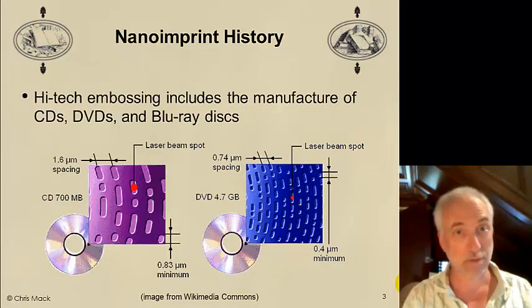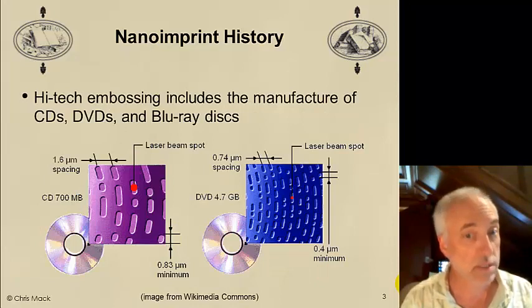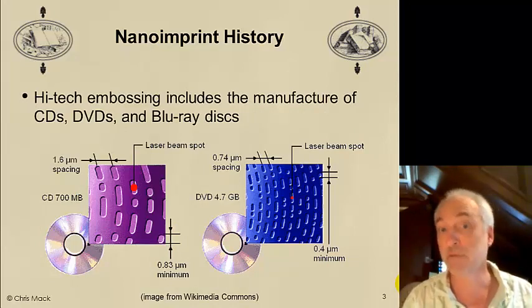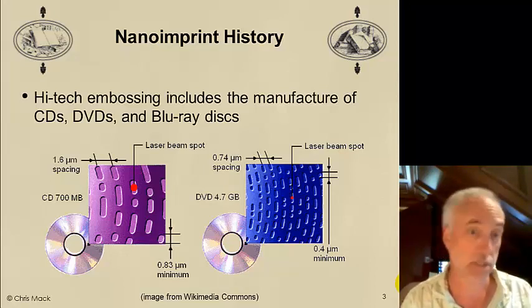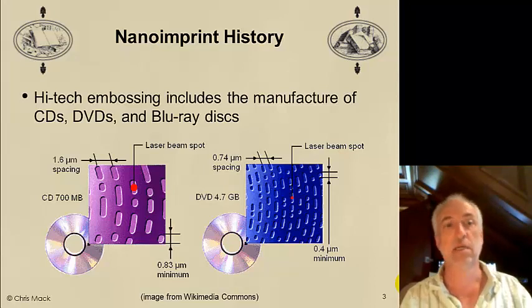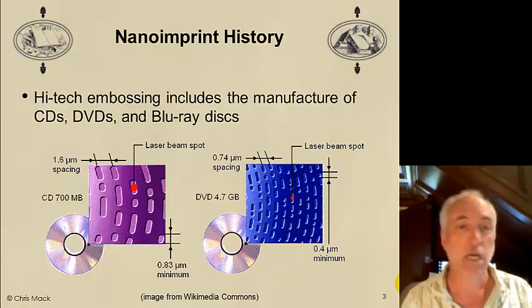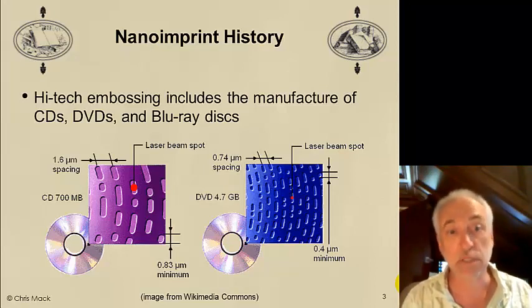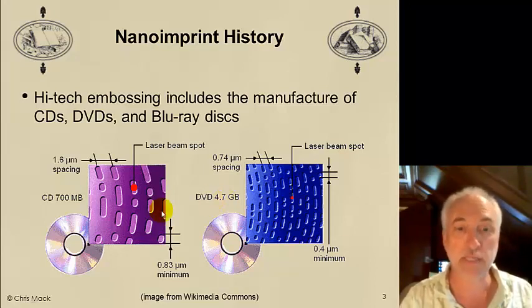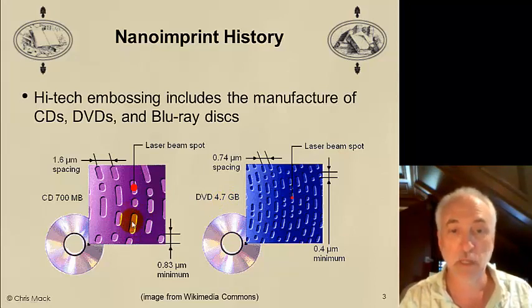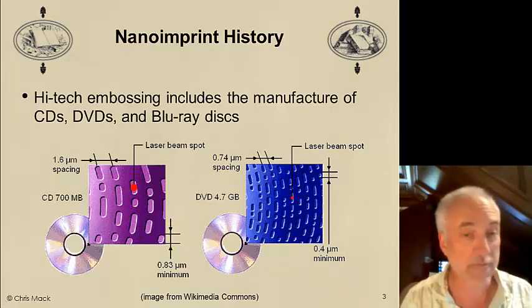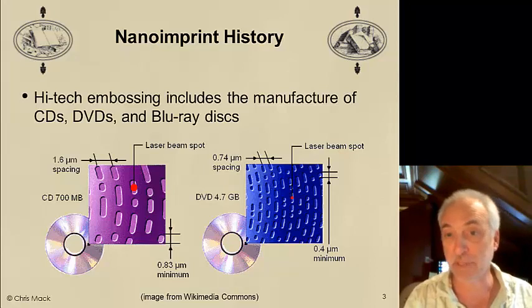In the high-tech world, we've used embossing as a way of manufacturing small patterns for quite a while, since the early days of CD manufacturing in the 1980s. This is also an embossing process. The original CDs had feature sizes that were less than one micron, and we record pits into a plastic material that, when we shine a laser on, we get different reflectivities, and that allows us to record information in the size of these pits. DVDs have smaller pits in these grooves, and Blu-rays even smaller still.